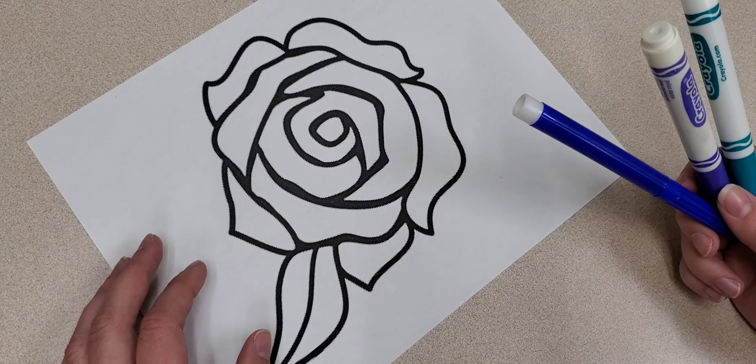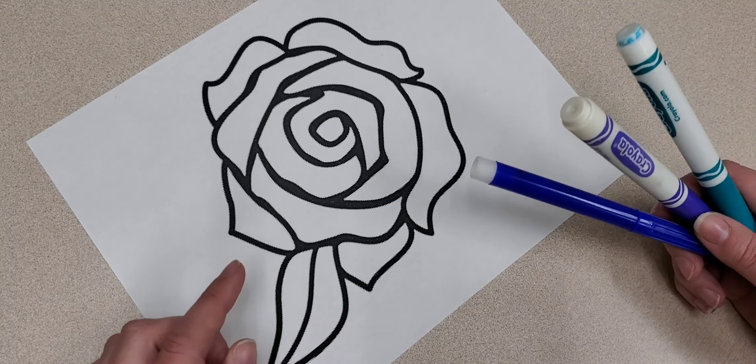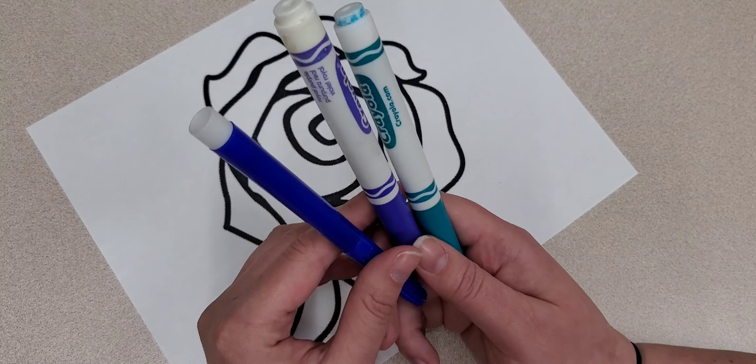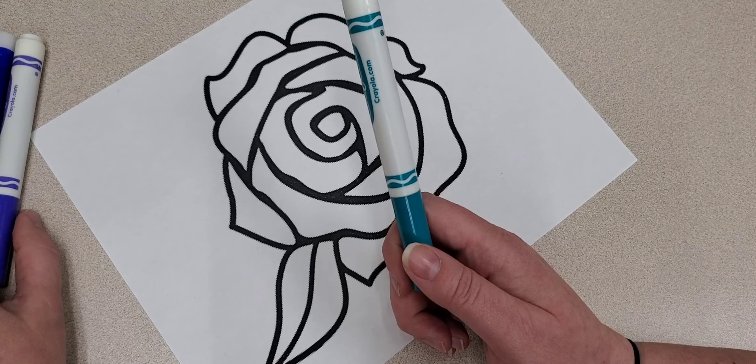The first thing that you'll do is figure out where your darkest spots are going to be and where your lightest spots are going to be. And then you'll decide which color you want to go with. So for this one I think I'm going to start out with this color. This being my lightest color of the three.